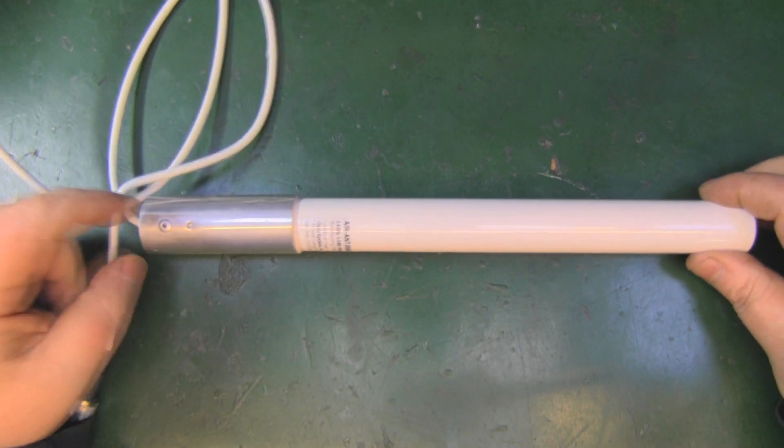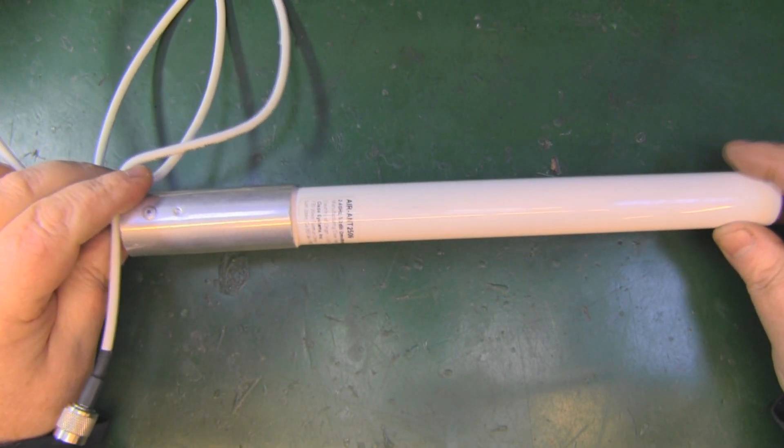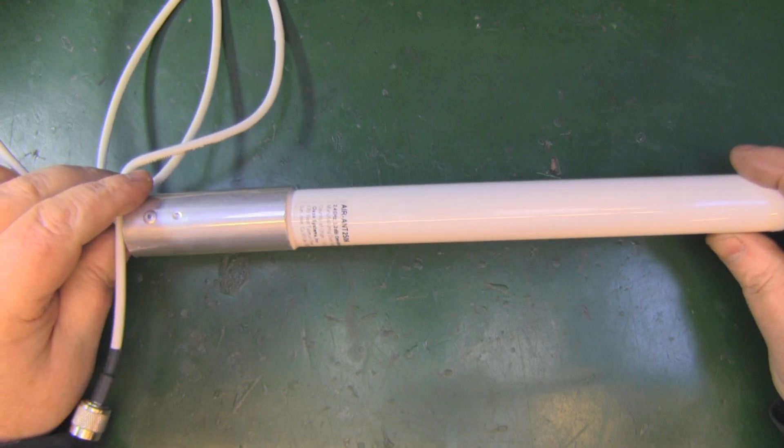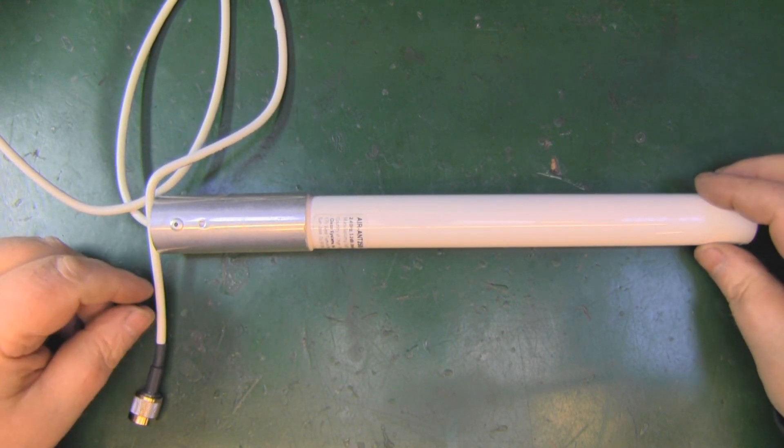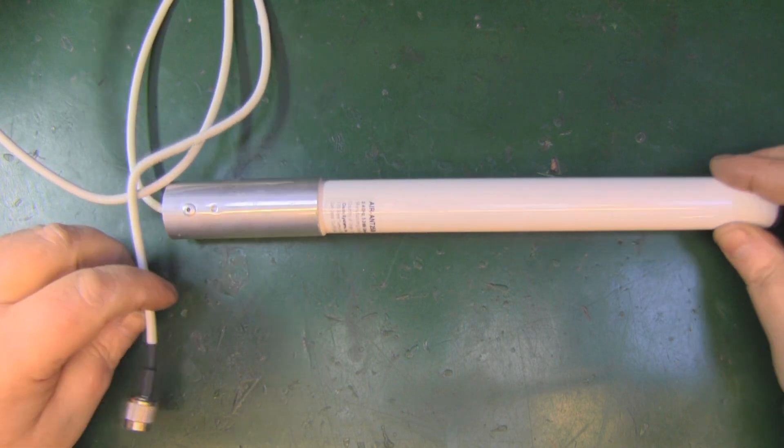I've got another Cisco antenna to take a look at. I picked this up pretty cheap—I think I paid six pounds for it. It's not new, it's been used, but it's in pretty good condition. It's the Air-Ant-2506.